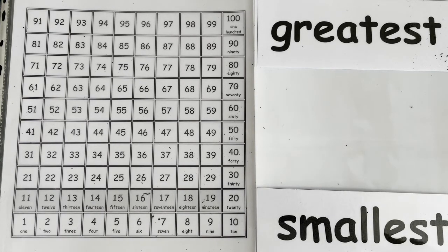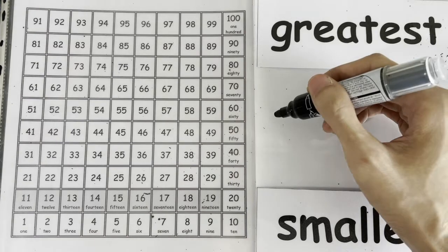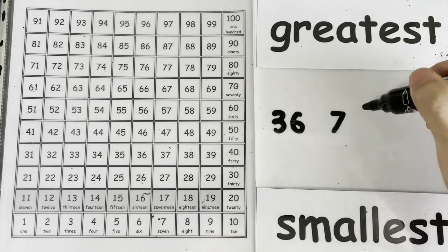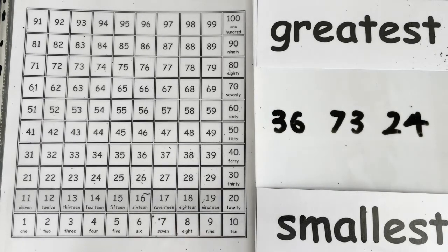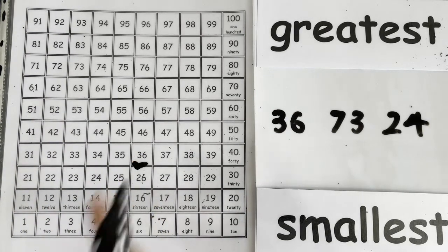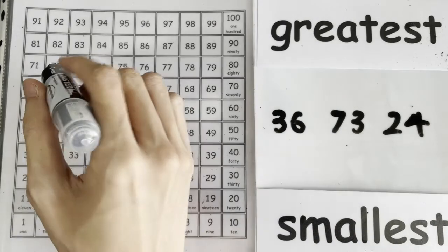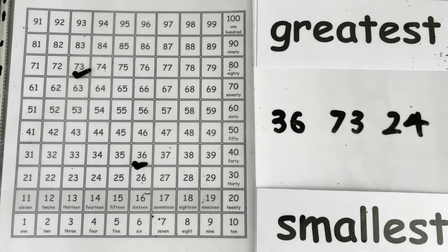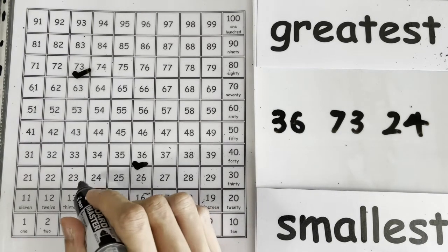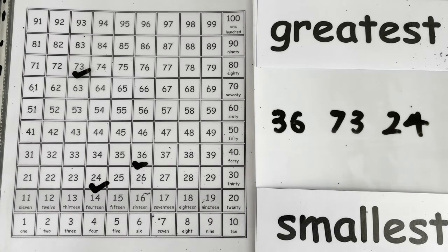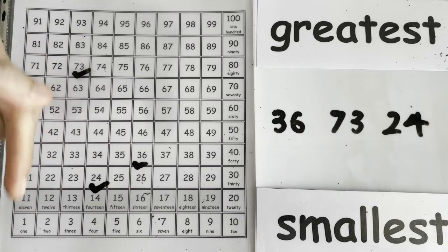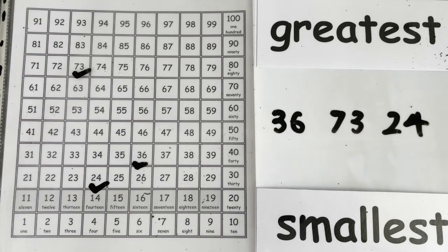I'm going to give you three numbers and you tell me which is the greatest and which is the smallest. The three numbers are 36, 73, and 24. Let's find them on the chart. Here is 36 — I'll put a small mark here. Here is 73 — a small tick here. And here is 24. Which is the smallest? The one lowest down on the chart — it's 24. So 24 is the smallest. Which is the greatest? The number highest in the chart is 73. So 73 is the greatest.